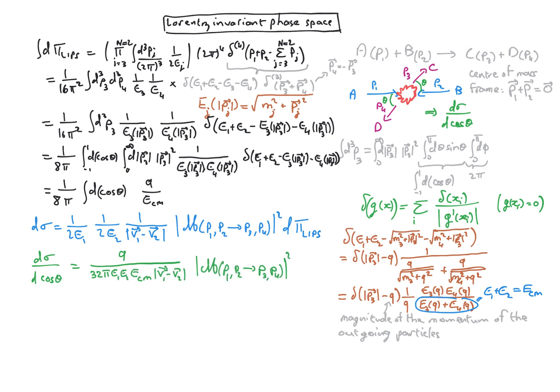As an exercise, you can verify that when the particles are ultra-relativistic, that is when we can set the masses to zero, we get the cross section in the center of mass frame.